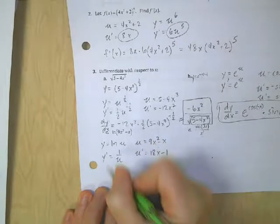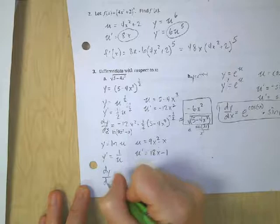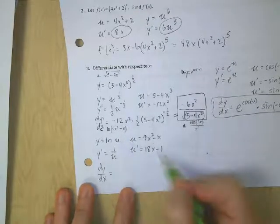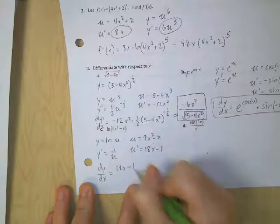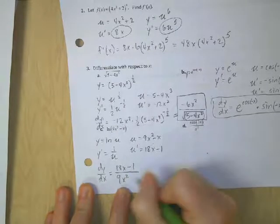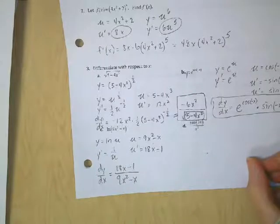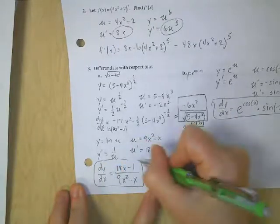So now I'm going to multiply those together. So my dy dx, my derivative, is going to be this times that. So this is going to end up on top. So 18x minus 1 over u. And u is 9x squared minus x. So I could look to see if I can factor and reduce that. But just looking at it, I don't see that I'm going to have any luck there. So I'm just going to leave it alone.